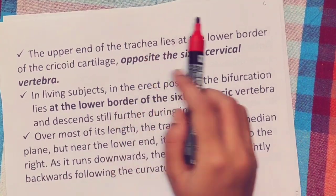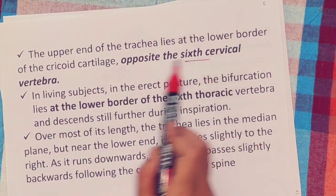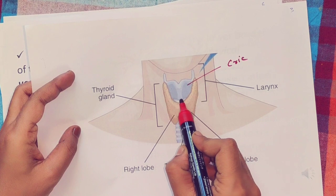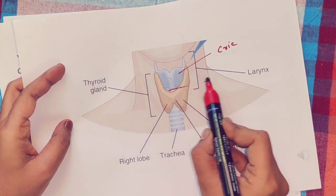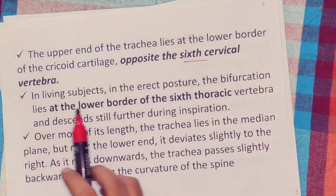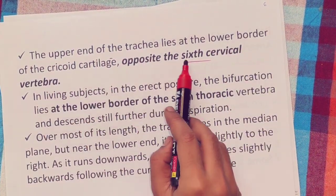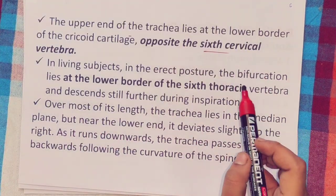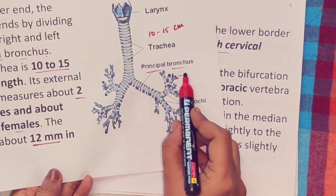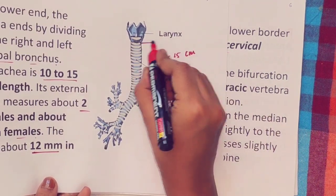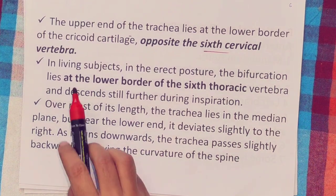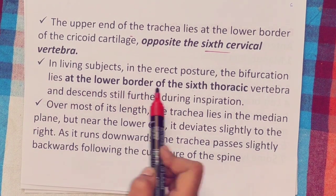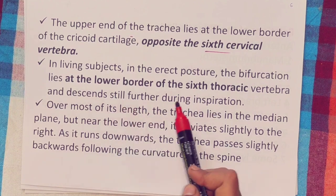The upper end of the trachea lies at the lower border of the cricoid cartilage, opposite to the C6 cervical vertebra. The lower end, the bifurcation, lies at the level of T6 thoracic vertebra in the living individual in the erect posture. The bifurcation lies at the lower border of the T6 thoracic vertebra and descends further during inspiration.